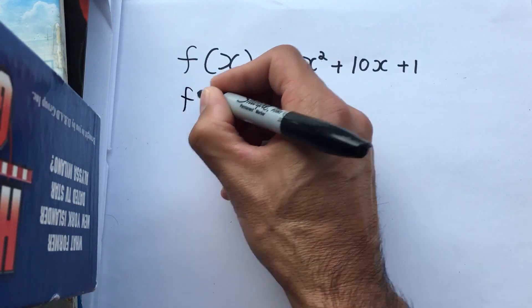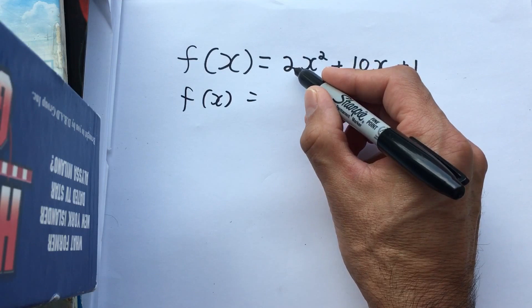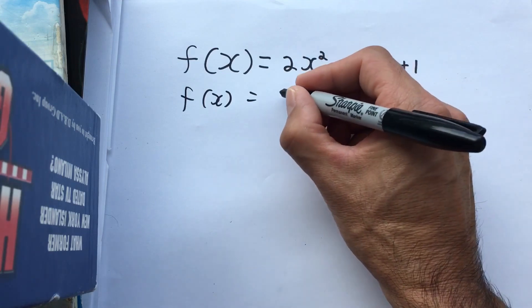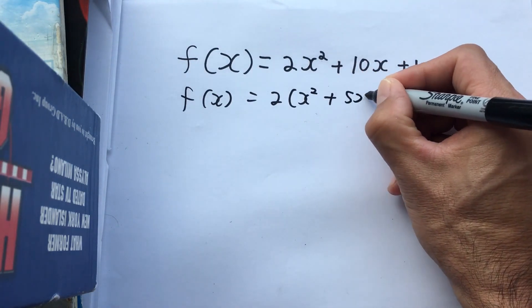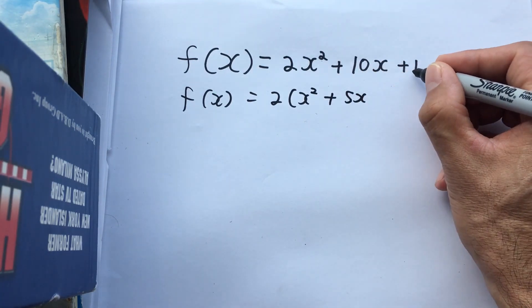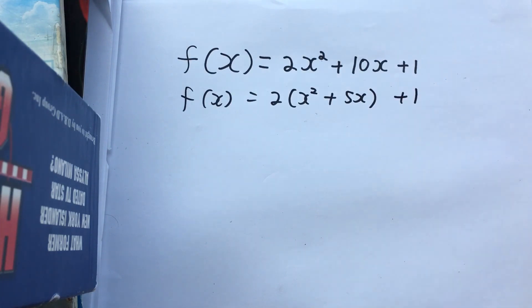So the first thing we're going to do is divide out the 2 so that we've got no coefficient in front of x squared. So I've got 2 times (x² + 5x), and that one we can just leave out. So I'll close off the bracket and we've got a plus 1 over here.